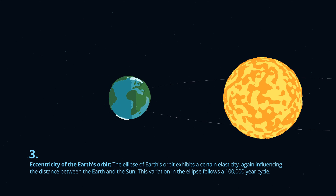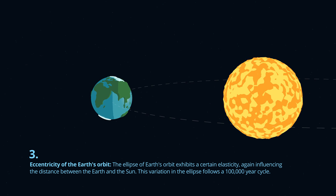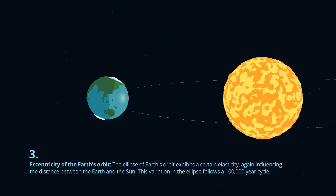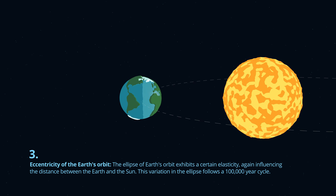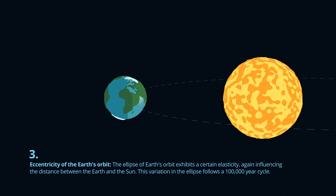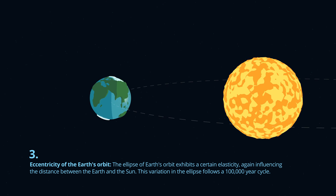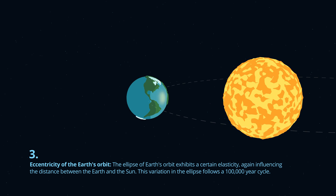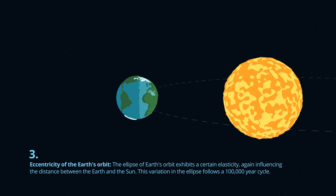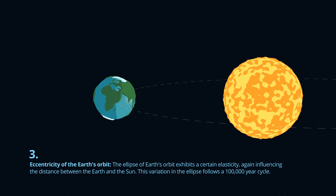Eccentricity of the Earth's orbit. The ellipse of the Earth's orbit exhibits a certain elasticity, again influencing the distance between the Earth and the Sun. This variation in the ellipse follows a 100,000-year cycle.